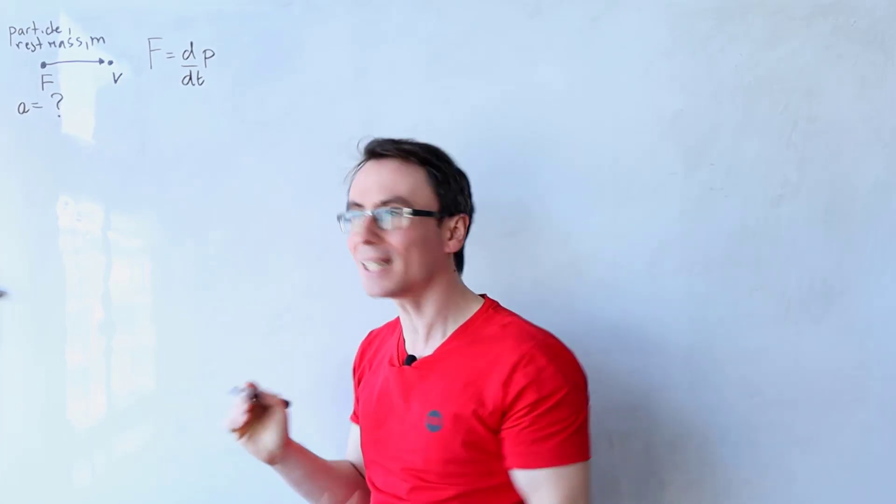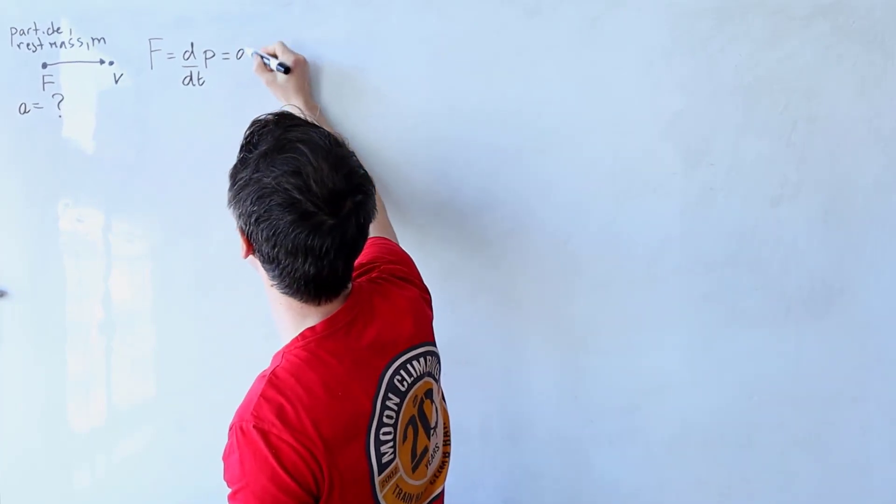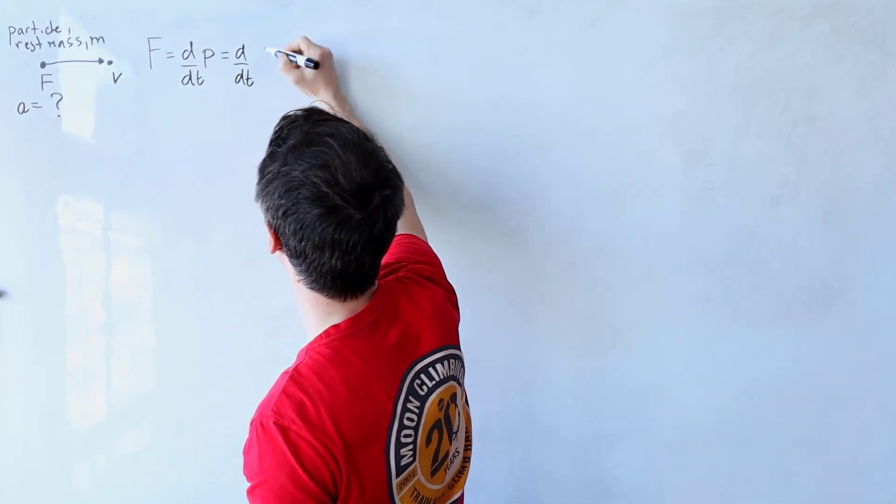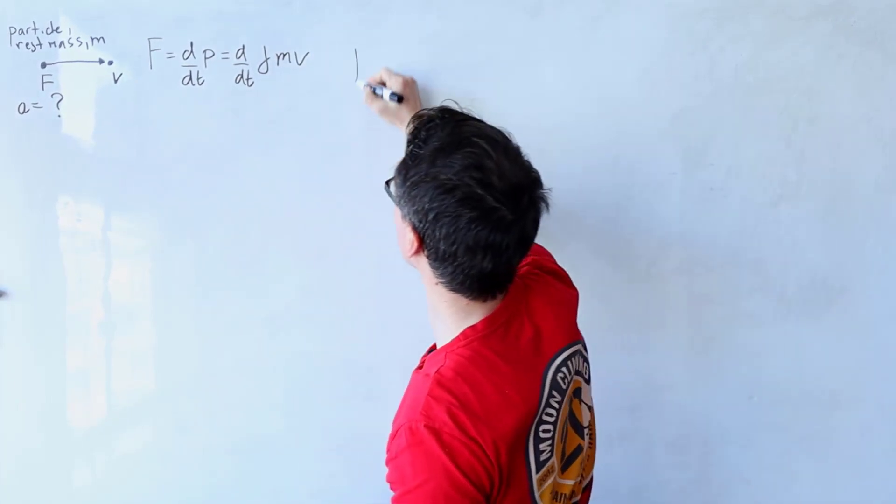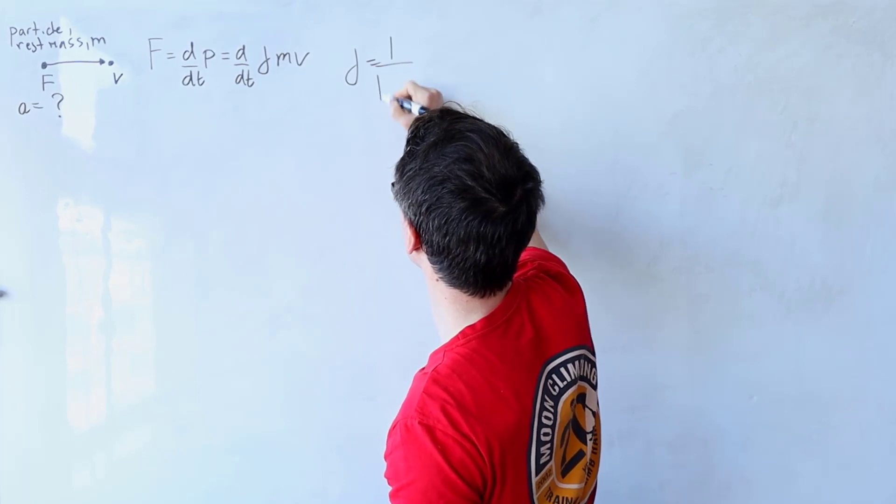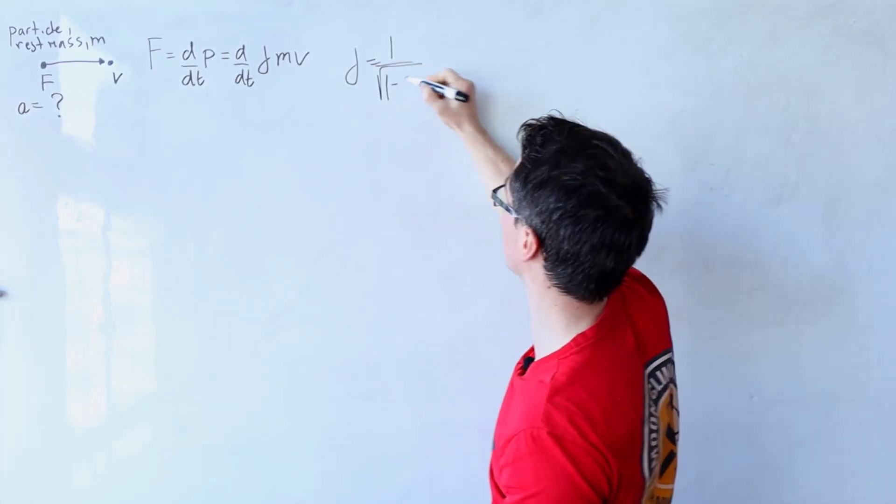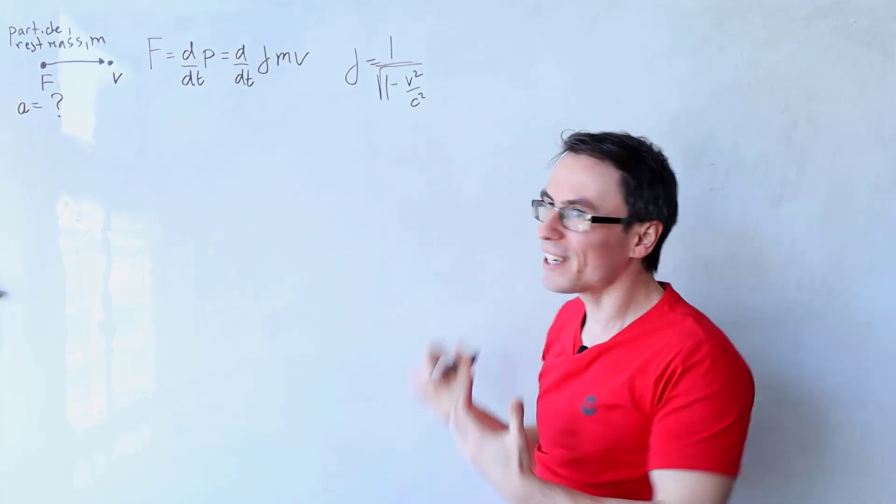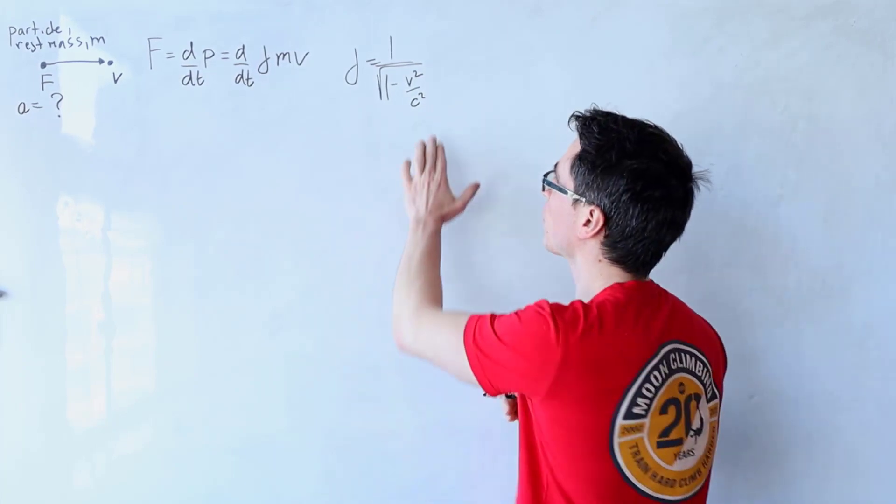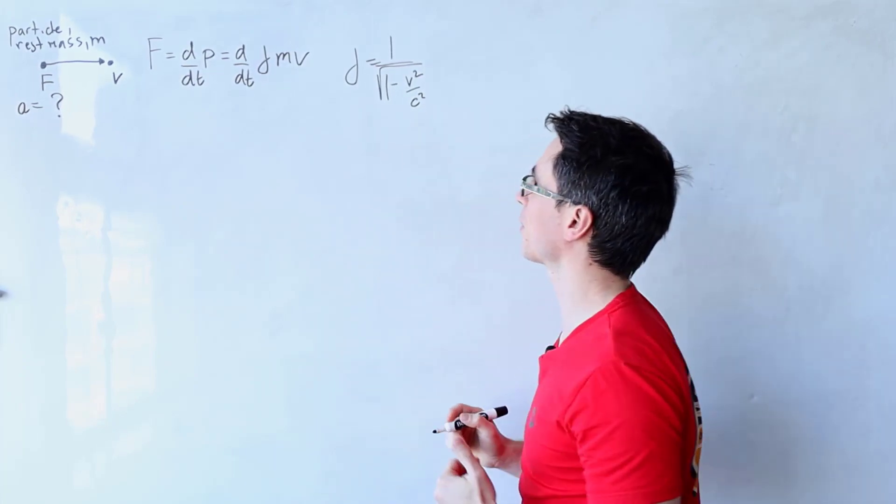However, remember in relativity, the momentum is given by gamma mv, where gamma is just the relativistic factor, which is equal to one over the square root of one minus v squared over c squared, where v is the speed of the particle with respect to the rest frame, and c is the speed of light.